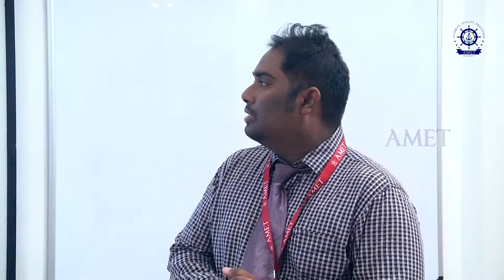The flow regime is identified as steady state flow if the pressure at every location in the reservoir remains constant and does not change with time. Unsteady state flow is the fluid flowing condition at which the rate of change of pressure with respect to time at any position in the reservoir is not zero. Pseudo steady state flow is when the pressure at different locations in the reservoir is declining linearly as a function of time at a constant declining rate.